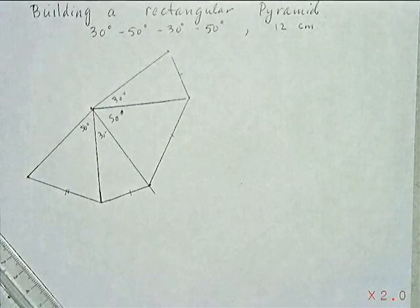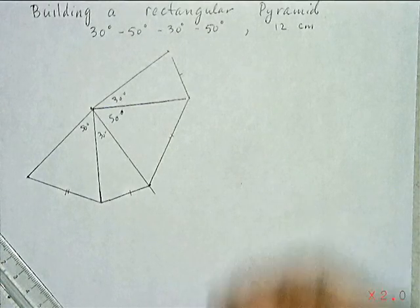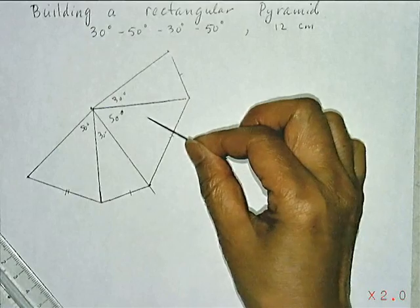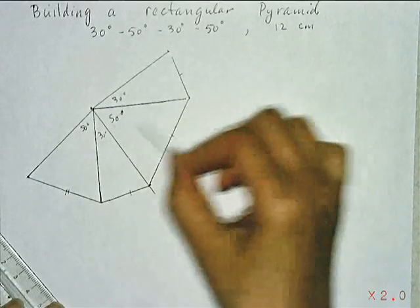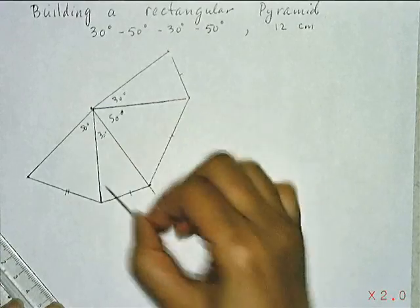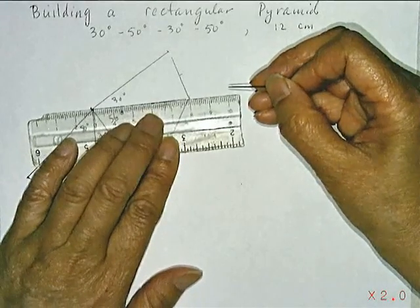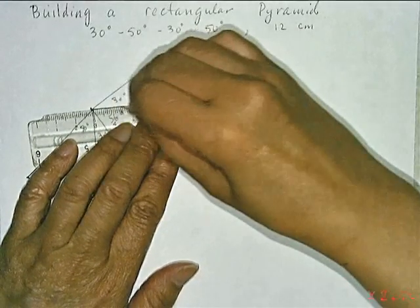What you will then do is take a pin and you are going to score along the fold lines. So these are your fold lines. So you take a pin and a ruler and you are going to scratch on that line.